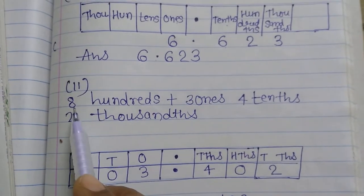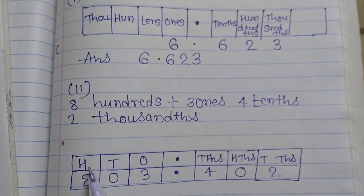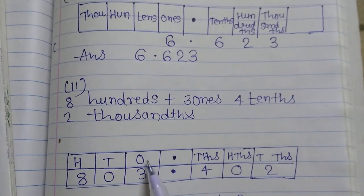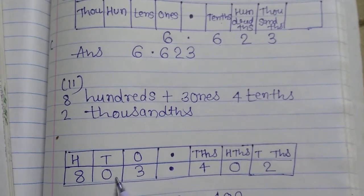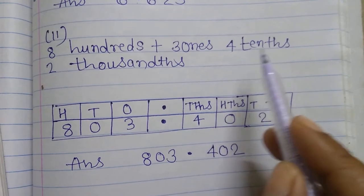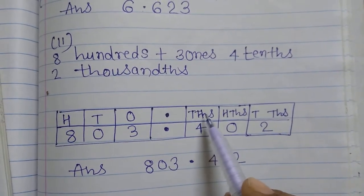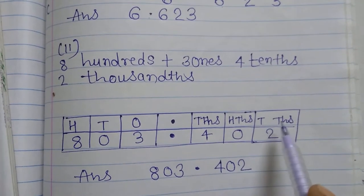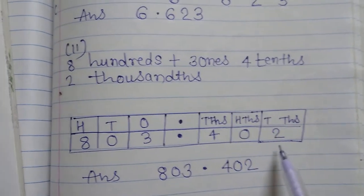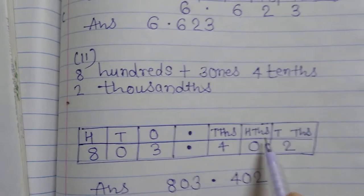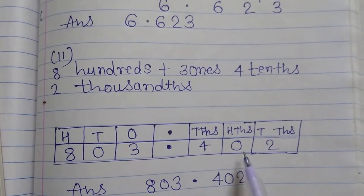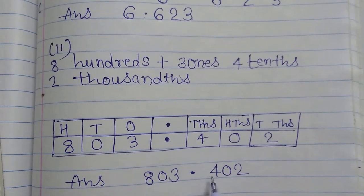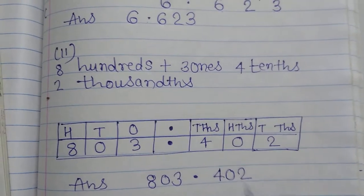Now let's fill in the chart. In the hundreds box we have 8. In the ones box we have 3. The tens box has nothing given, so we fill zero. In the tenths box we have 4. Hundredths is not given, so we fill zero. In the thousandths box we have 2. So the answer is: 830.402. You can write it directly once you understand the method, or use the place value chart.